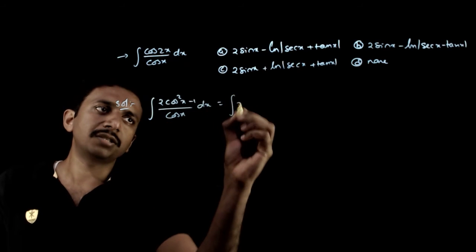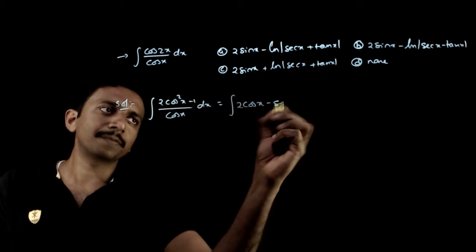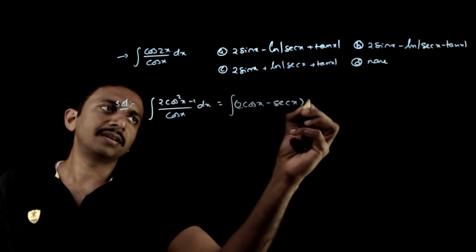If you separate this, you get the integral of 2cos x minus sec x dx.